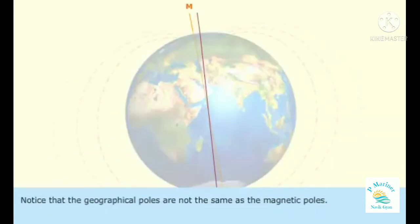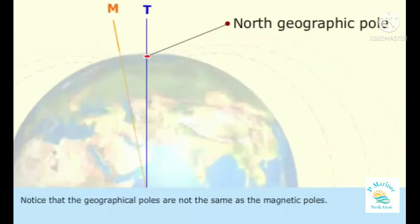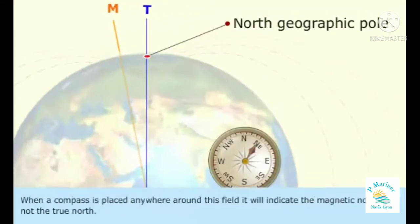Notice that the geographical poles are not the same as the magnetic poles. When a compass is placed anywhere around this field, it will indicate the magnetic north and not the true north.